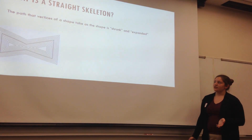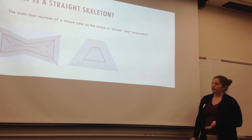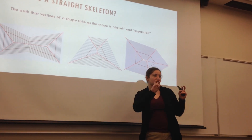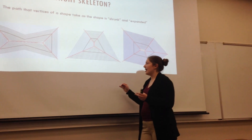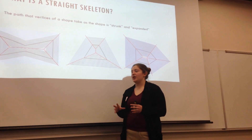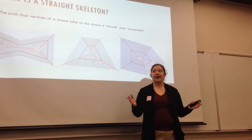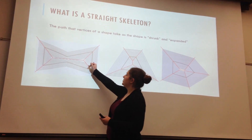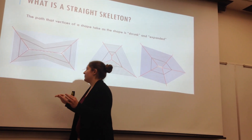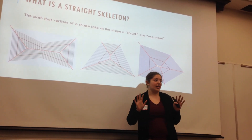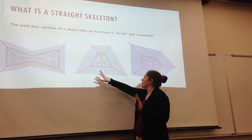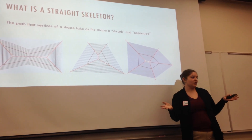So what is a straight skeleton? A straight skeleton tracks the path of vertices as we shrink a shape. It's important to note that when we shrink a shape, we're not creating smaller similar versions of it. We're actually offsetting each edge of the shape perpendicularly by a certain distance. This allows the shape to change and move, creating different points and forming the graph.